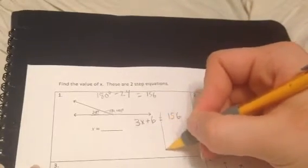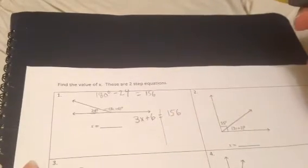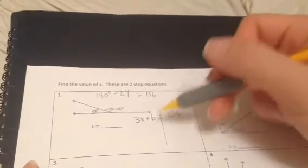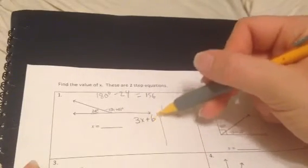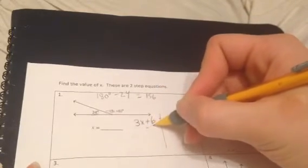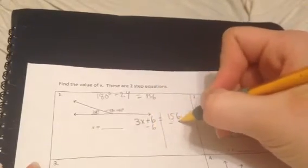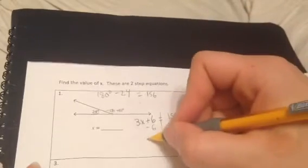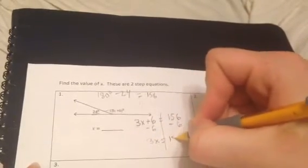So we'll draw our line. And so remember when you have a two-step equation, you do reverse order of operations. So you always want to get rid of the plus or the minus first. So because this is a plus 6, we want to do a minus 6 on both sides. So then we'll have 3x equals 150.